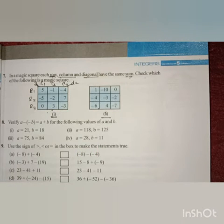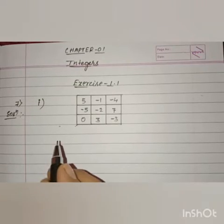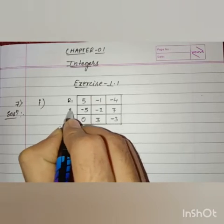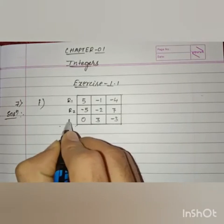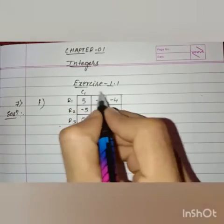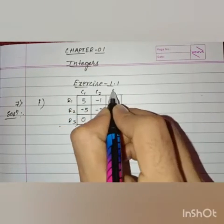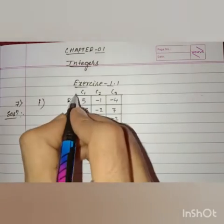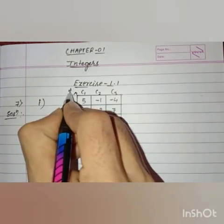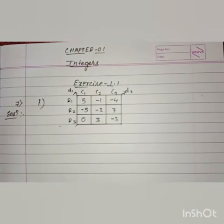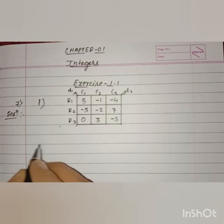Let us solve now. This is row 1, row 2, and row 3. Next, this is column 1, column 2, column 3. Next, this is diagonal 1 and this one is diagonal 2. Now let us find out the sum of the rows, columns, and also diagonals.